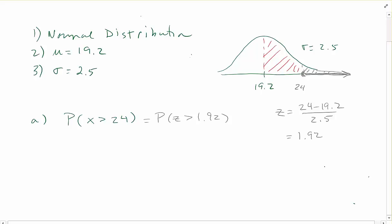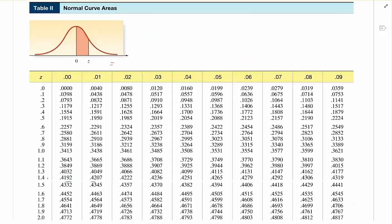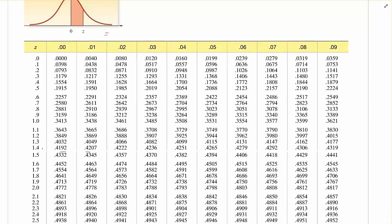So let's go to the standard normal table and look up 1.92. 1.9 and then in column 0.02, so 0.4726 would be my value.